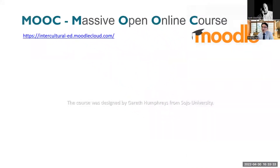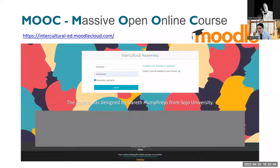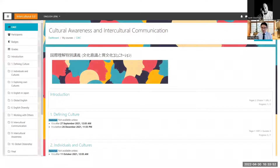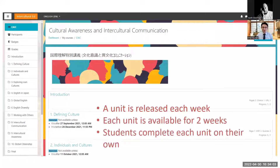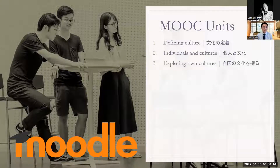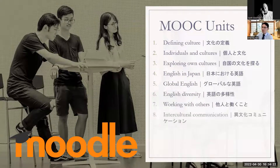I'm going to run through all the different components. For Moodle, students log in and register. This was created by my colleague Gareth from Sojo University. There are 10 units in total. Each week a unit is released and students are given two weeks to complete it by themselves. The topics include: defining culture, individuals and culture, exploring own culture, English in Japan, global English, English diversity, working with others, intercultural communication, and intercultural citizenship.